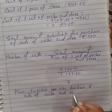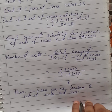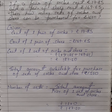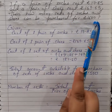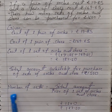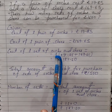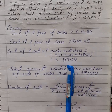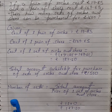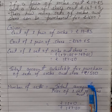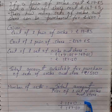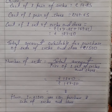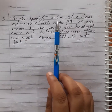Hence, in rupees 1500 we can purchase 8 sets of socks and shoes. To summarize: the cost of one pair of shoes and one pair of socks is given, and the total amount is rupees 1500. First we find the total cost of one set, which is 187.50. Then total amount divided by the price of one set gives us the number of sets, which is 8.